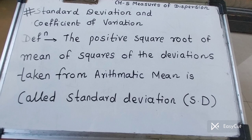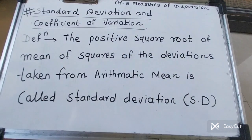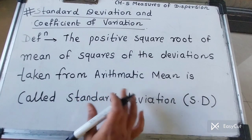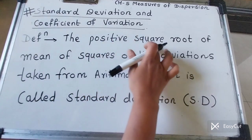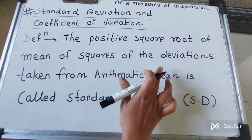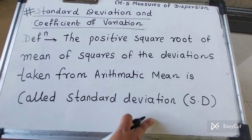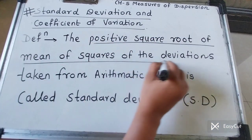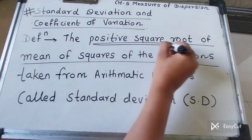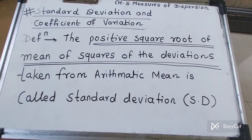Next new topic: Standard Deviation and Coefficient of Variation — a very important topic. The definition of standard deviation: the positive square root of the mean of squares of the deviation taken from the arithmetic mean. Remember: positive square root of mean of squares of the deviation.